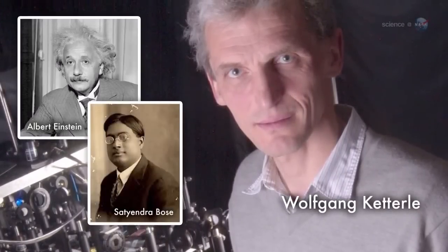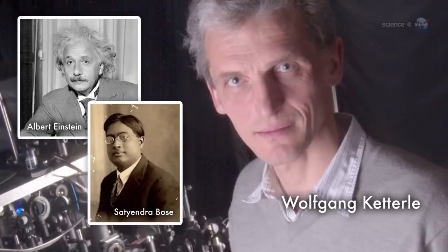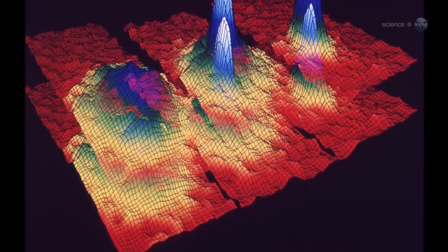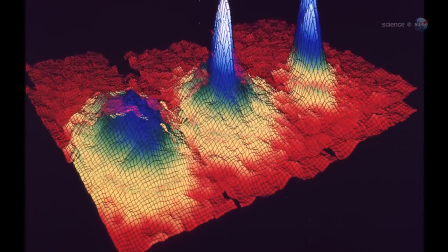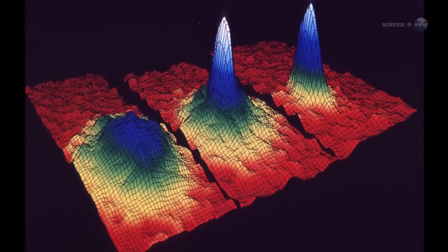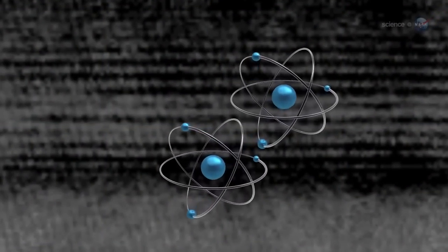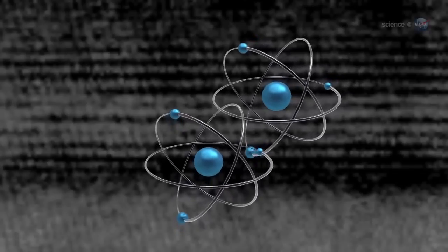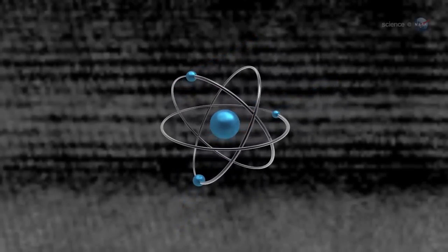If you create two BECs and put them together, they don't mix like an ordinary gas. Instead, they can interfere like waves. Thin, parallel layers of matter are separated by thin layers of empty space. An atom in one BEC can add itself to an atom in another BEC and produce no atom at all.